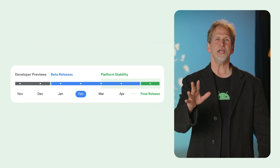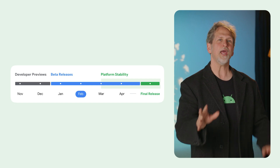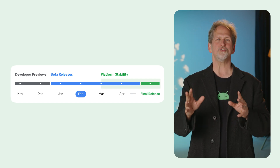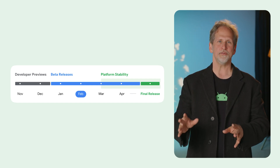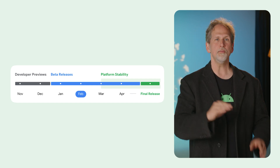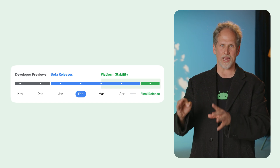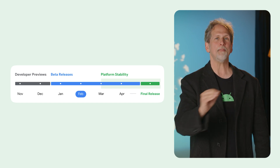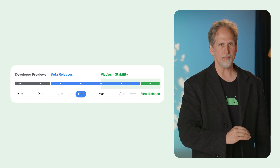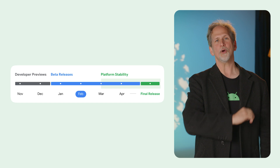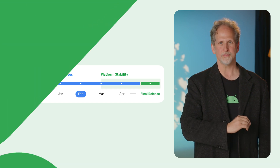Android 16 introduces major and minor API releases to allow faster innovation. Only the Q2 major release cycle includes app-impacting planned behavior changes, so make sure to test your app against Android 16.